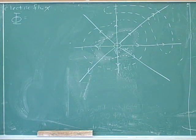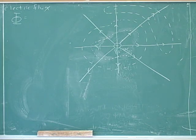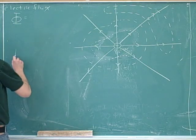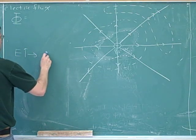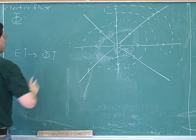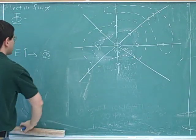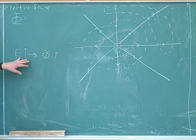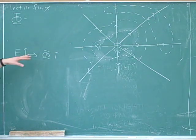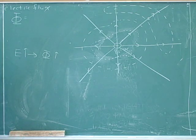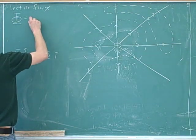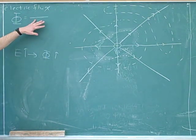Phi measures the net amount of electric field that is exiting the surface. So what should it depend on? Suppose the electric field becomes stronger — that should increase phi, because if there is a greater electric field, more of it will be exiting the surface. We'd see that in pictures because when the electric field is stronger, the field lines are closer to each other, and more of them will pass through each portion of the surface. So electric field should go in the numerator.